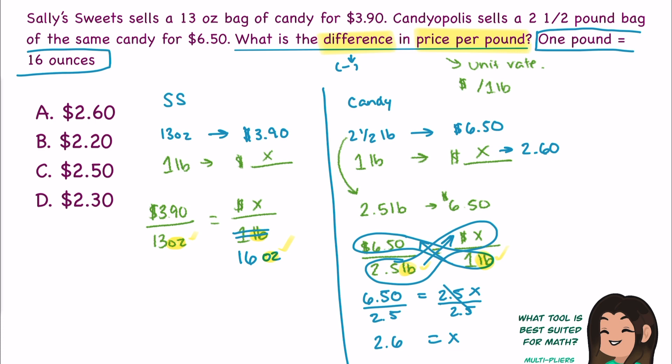From here, I can cross multiply to solve, because equivalent fractions will have equivalent cross products. 3.9 times 16 gives me 62.4, and 13 times x just gets me 13x. I want to get x by myself, so I'm going to divide by 13, divide by 13. 62.4 divided by 13 gets me 4.8, and 4.8 equals x. So one pound from this store is going to cost us $4.80.